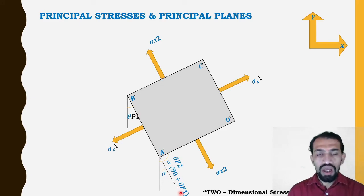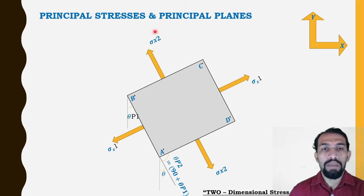So theta p2 is equal to 90 plus theta p1. Sigma x2 is the minimum or maximum principal stress.